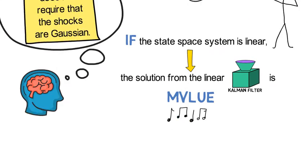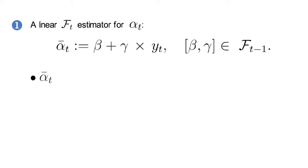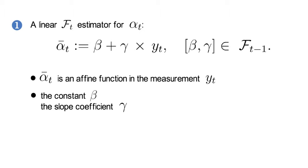First, we define a linear FT estimator for alpha t to coincide with the following expression: alpha-bar-t is an affine function in the measurement yt, where the constant beta and the slope coefficient gamma are FT-1 measurable. For the Kalman filter, we always work with conditional one-step-ahead forecasts. Therefore, it suffices that these coefficients are FT-1 measurable. Make sure you get that insight.